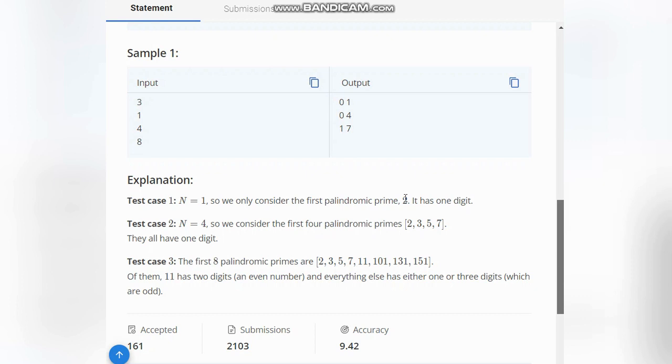Now for the third test case, N=8. The first 8 palindromic primes are 2, 3, 5, 7, 11, 101, 131, and 151. Of course, 11 has 2 digits (even), and everything else has either 1 or 3 digits, which are odd. So we have 1 even and 7 odd numbers, hence we print 1,7.